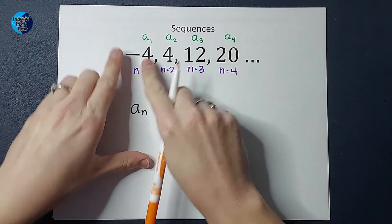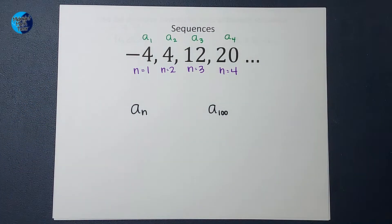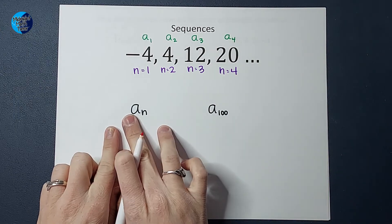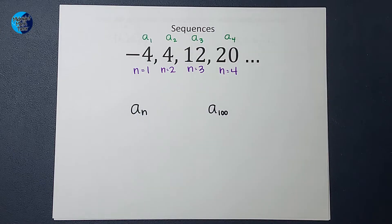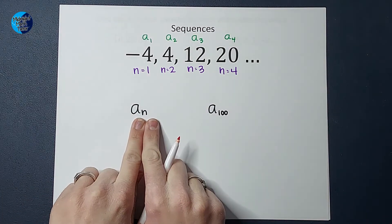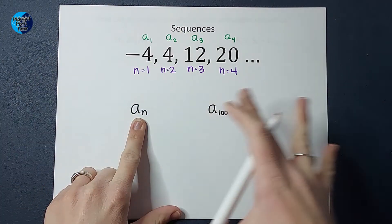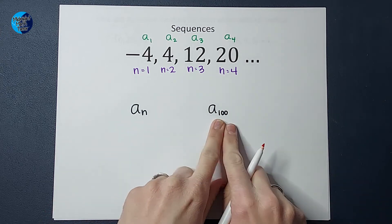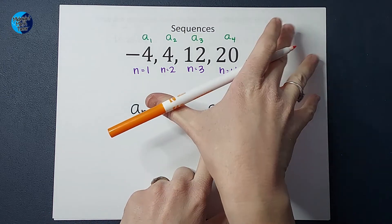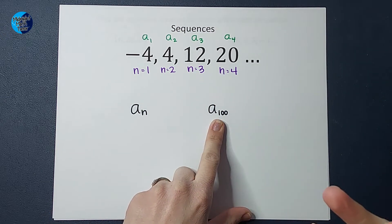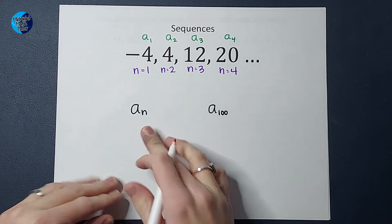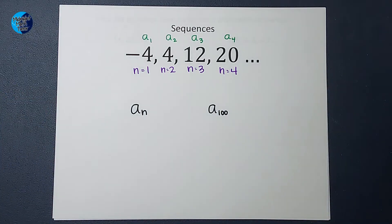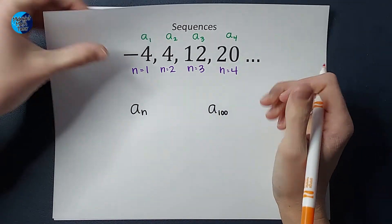So A sub one in this case is negative four. You're also going to see A sub N quite frequently. That means plug in whatever number you want for N to find that in the sequence. If I had A sub 100, I'm looking for the 100th term. As we write our formulas, we leave things as A sub N so people can plug in what they want.